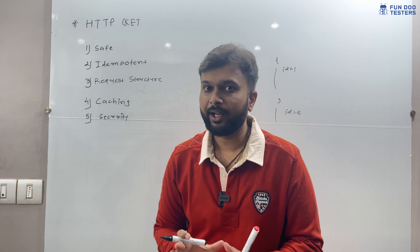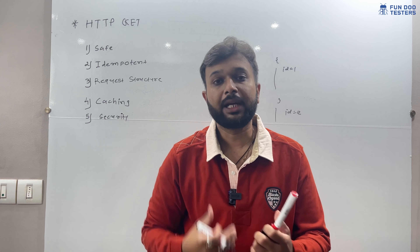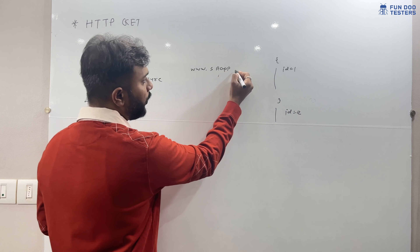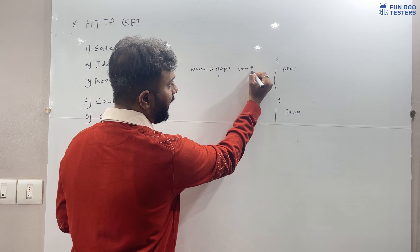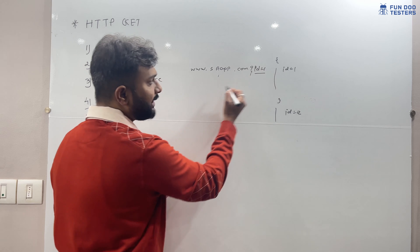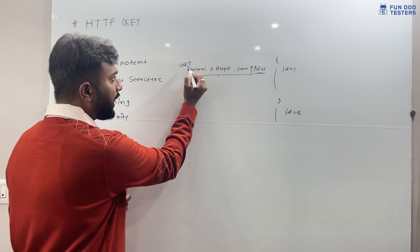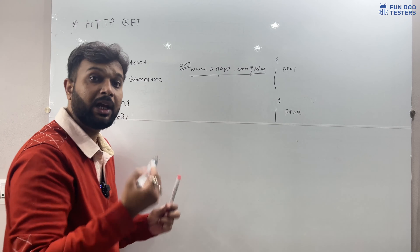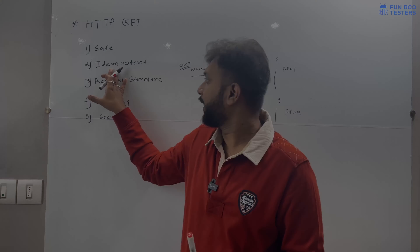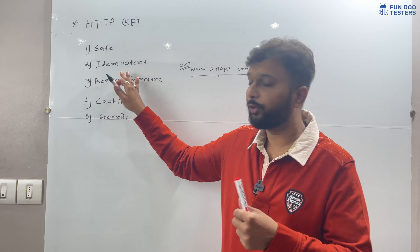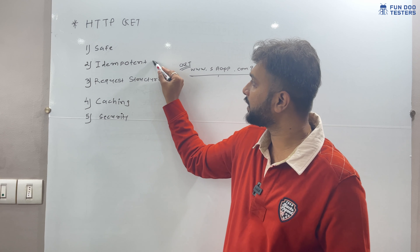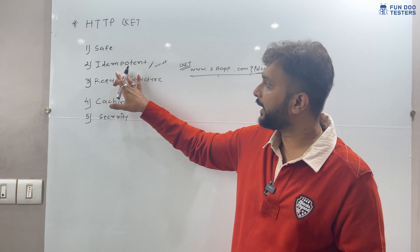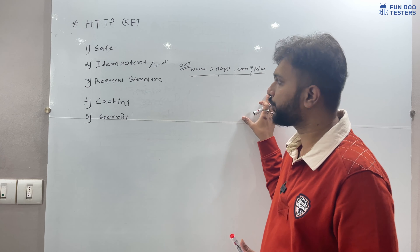Another property is idempotent. A GET request is idempotent because we can hit the same request any number of times — for example, calling www.studentapp.com with id=1 repeatedly. Irrespective of how many times we call it, the data is not going to change. In simpler terms, triggering the same GET request multiple times produces no change in data — that is what idempotent means.